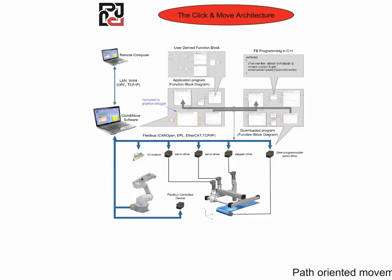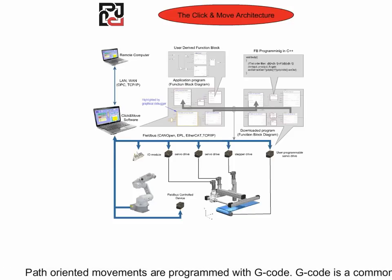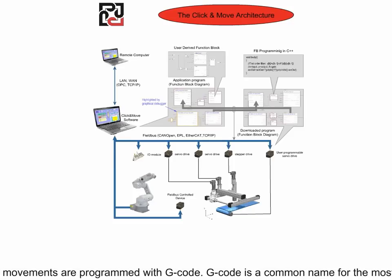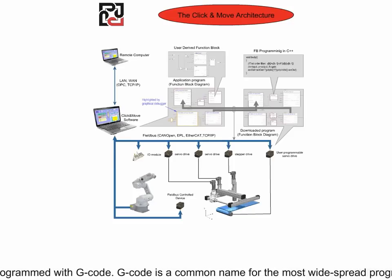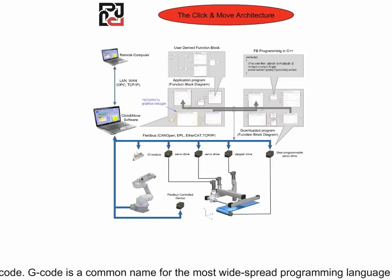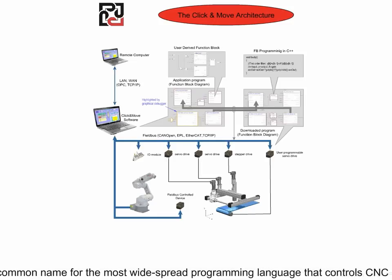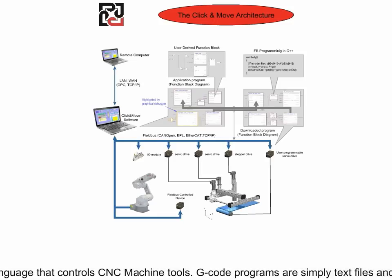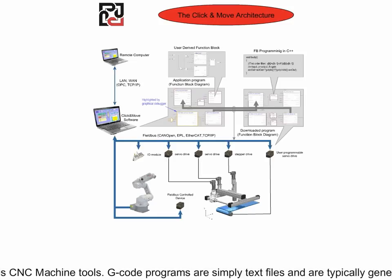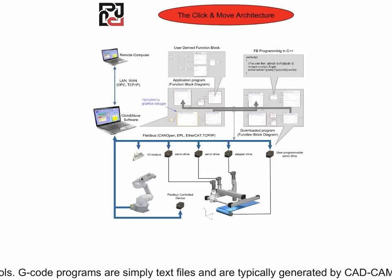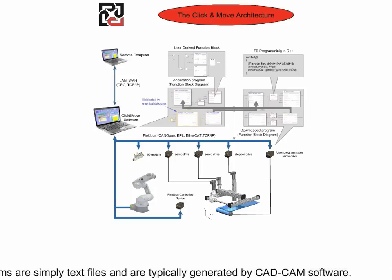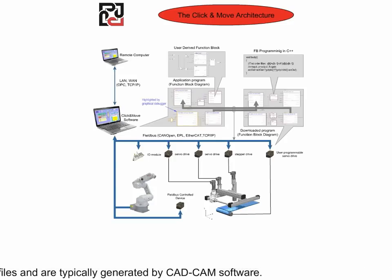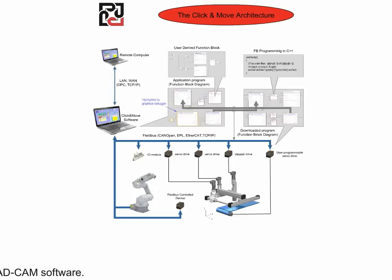Path-oriented movements are programmed with G-Code. G-Code is a common name for the most widespread programming language that controls CNC machine tools. G-Code programs are simply text files and are typically generated by CAD/CAM software.